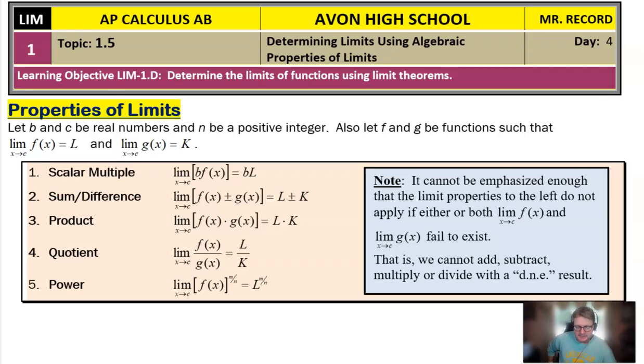Also let f and g be functions such that the limit of f of x as x approaches c is going to be capital L and the limit of g of x as x approaches c is going to be K. So let's highlight those things. We have this very important fact here in yellow and we have this very important fact in green. Nothing is going to change the fact that those two limits are going to be L and K respectively. L and K are just some real numbers.